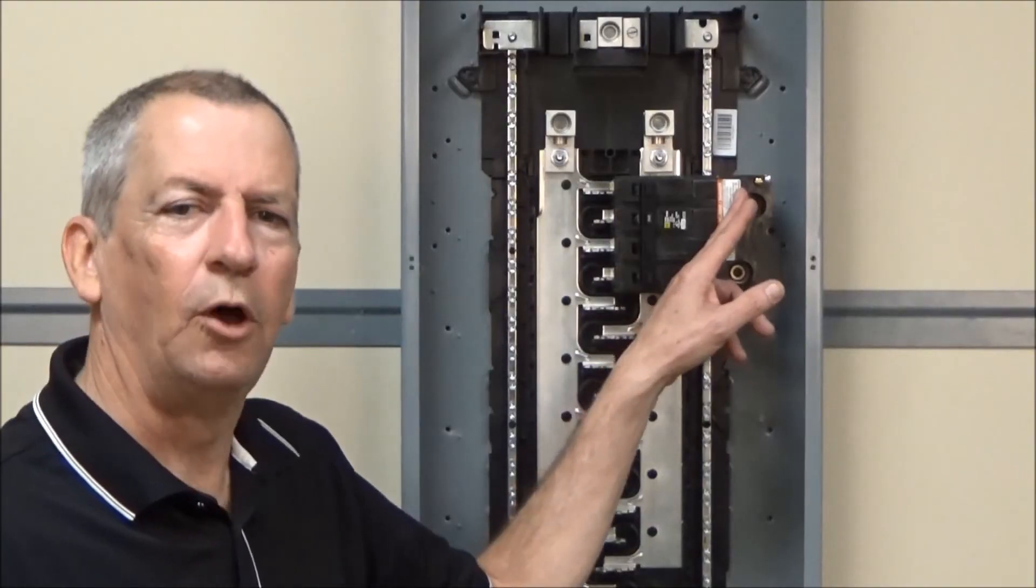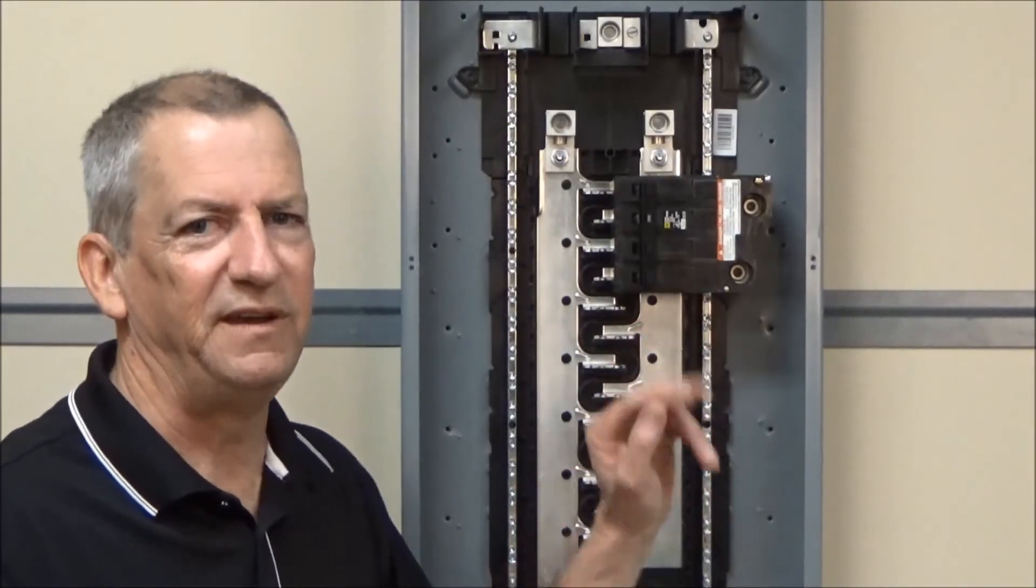Now with the retaining screw installed, you can use this branch breaker as a back fed main.